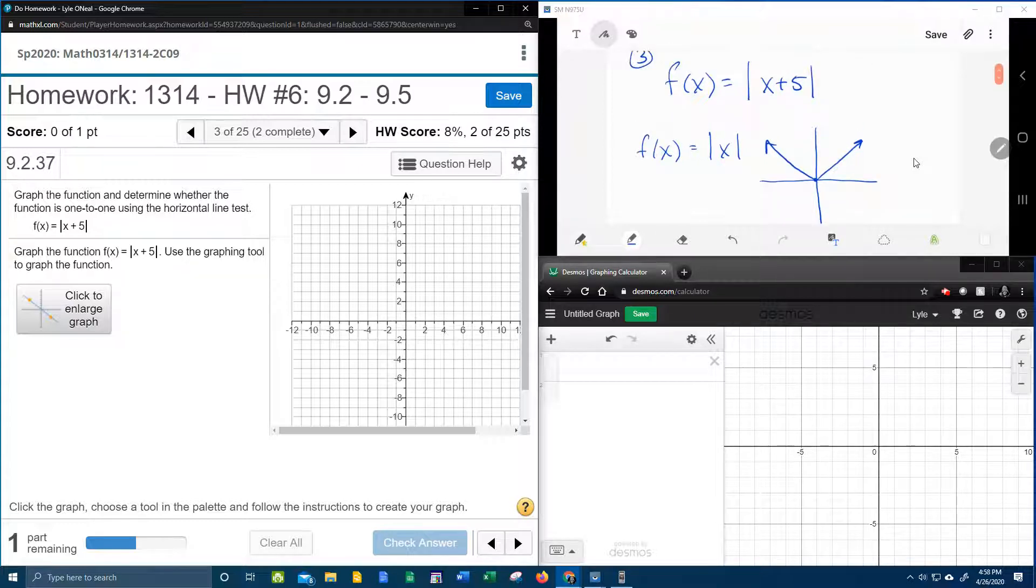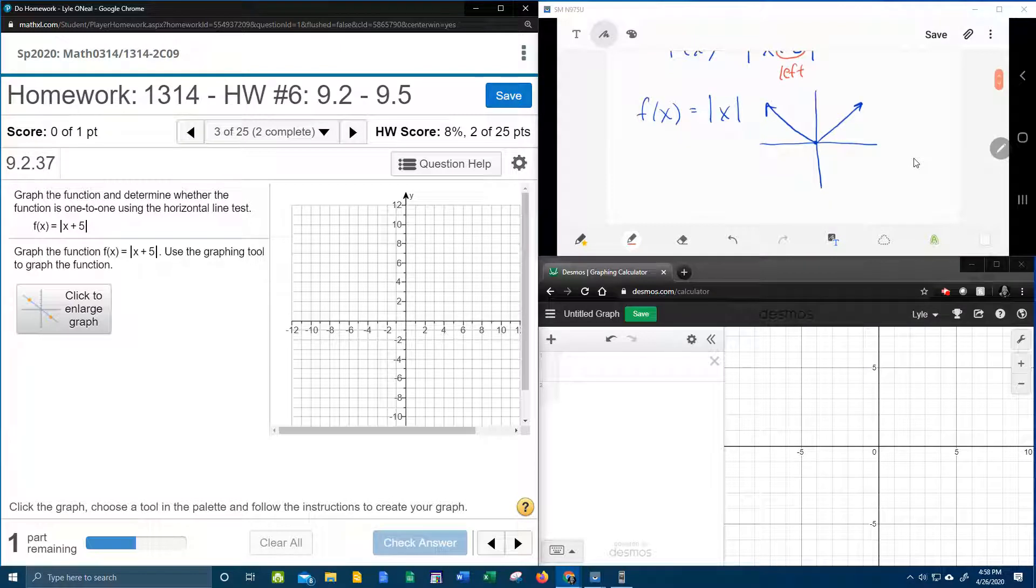What we have is a function that has a horizontal shift. The plus five is inside the absolute value, plus is left. So our graph would be one, two, three, four, five units to the left, but it's still going to be a v facing up.